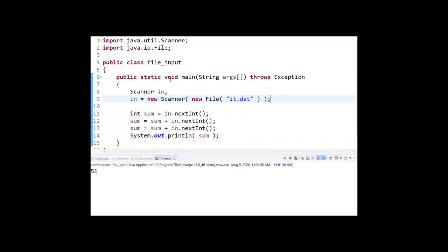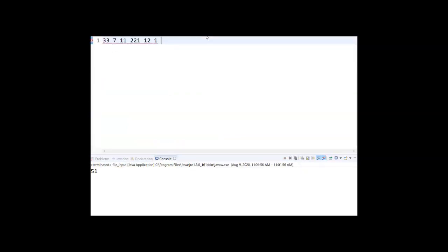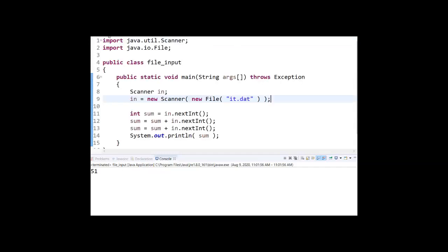I get 51, 51 being the sum of 33, 7, and 11. And so in this example, I didn't have to type anything in. I've already typed in the values, saved them in the data file it.dat, and then I connect to it and just read those in as if they were typed. Just a different way of using the scanner and just shows a different way to instantiate the scanner with different parameters connecting it to something other than just the keyboard.